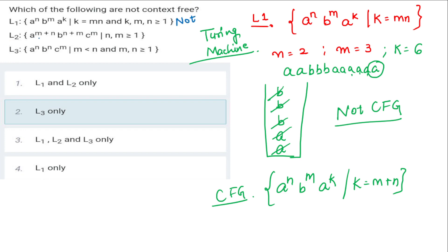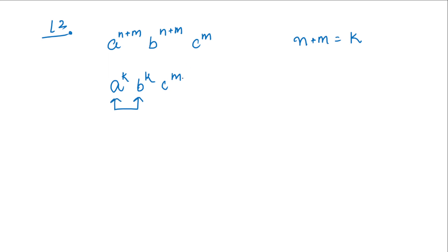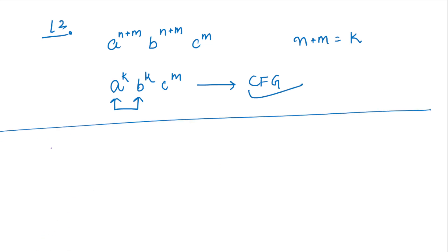Next, L2: a^(m+n) b^(n+m) c^m. Since the exponent of a equals the exponent of b — both are n+m — we can rename n+m as k. So L2 becomes a^k b^k c^m. There is only one comparison needed between the two equal exponents k, and m is free. That is why L2 is a CFG.